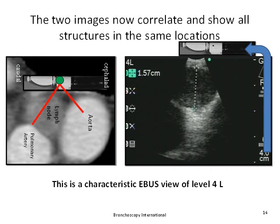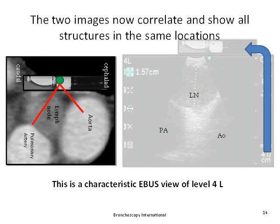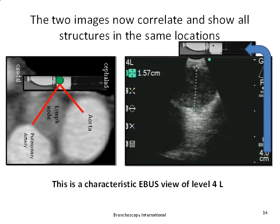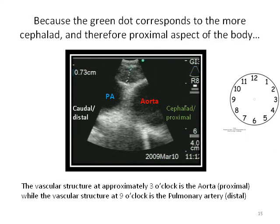The two images now correlate. Because the green dot is cephalad, the vascular structure at 3 o'clock is proximal and represents the aorta, while the vascular structure at 9 o'clock is more distal and represents the left pulmonary artery.